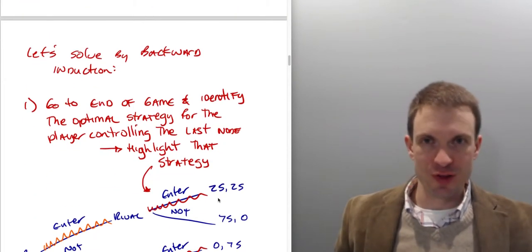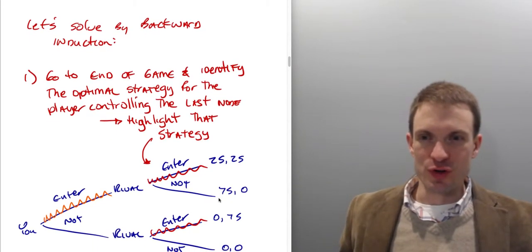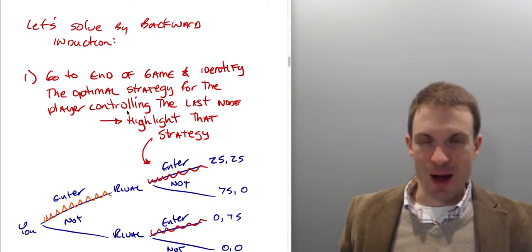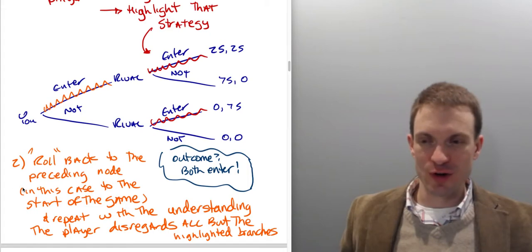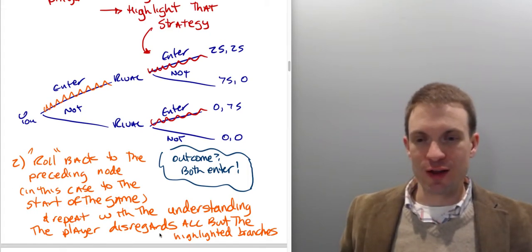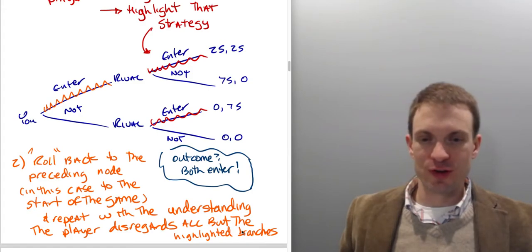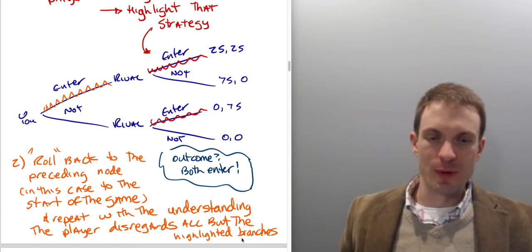Now let's solve this thing by backward induction. You go to the end of the game, you identify the optimal strategy for the player controlling the last node, highlight that strategy, and then roll back to the preceding node, in this case to the start of the game, and then repeat with the understanding that the other player is going to disregard all but the highlighted branches.